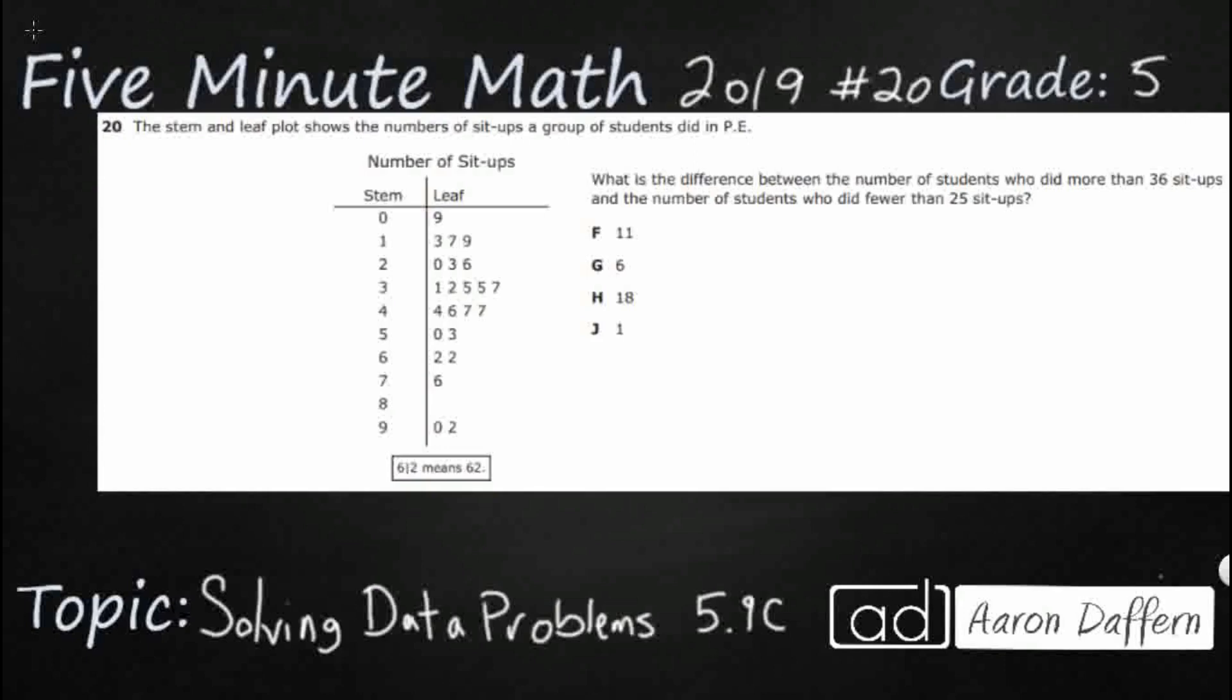So, we have a pretty big stem and leaf plot here, and it shows the number of sit-ups a group of students did in PE going all the way from 9 up to, it looks like, 92. So, how do I know those numbers? Well, let me show you how to read a stem and leaf plot.